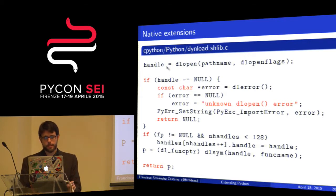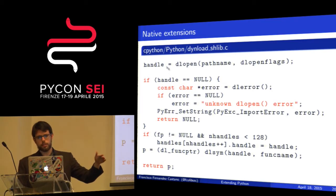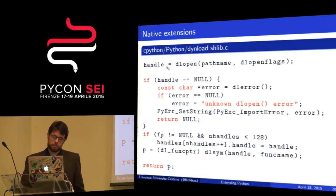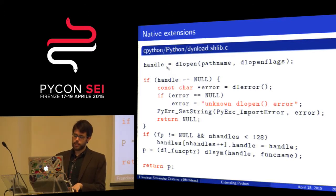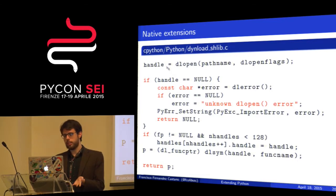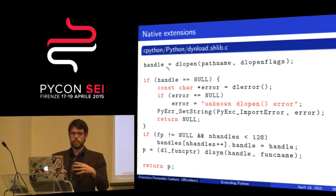What Python does is try to load the Python module, doing fallback after fallback, ending up trying to load the shared library here. It uses another system call — dlsym — which looks for a symbol. And that symbol it looks for is this init_newton symbol, to load our shared library during runtime.